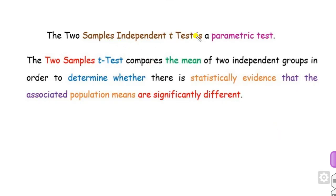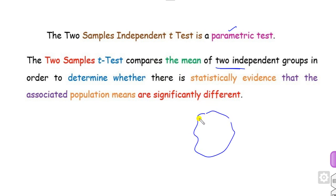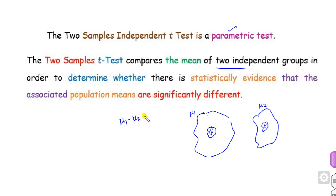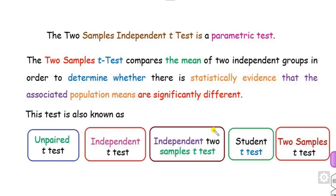The two-sample independent T-test is a parametric test used to compare the means of two different groups to determine whether their population means are statistically different or not. If we say population 1 with sample 1 and population 2 with sample 2, we want to analyze whether there is any significant difference between their population means — that is, whether mu1 minus mu2 equals 0. That is my H0.